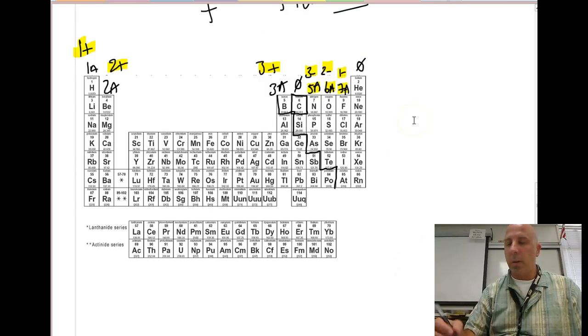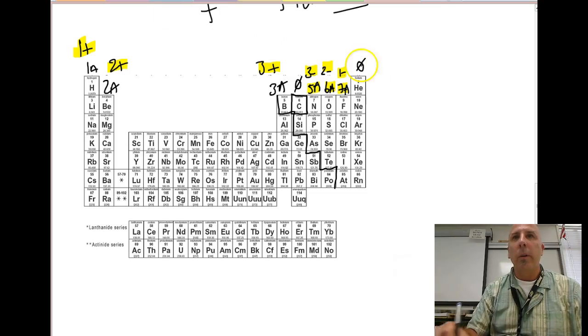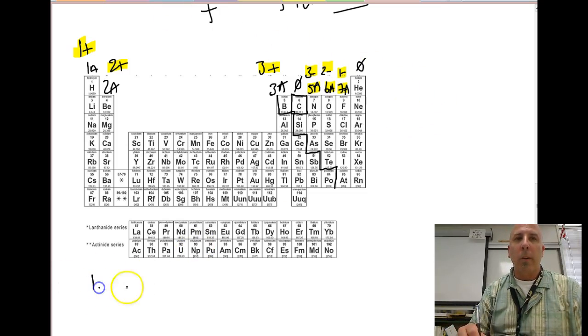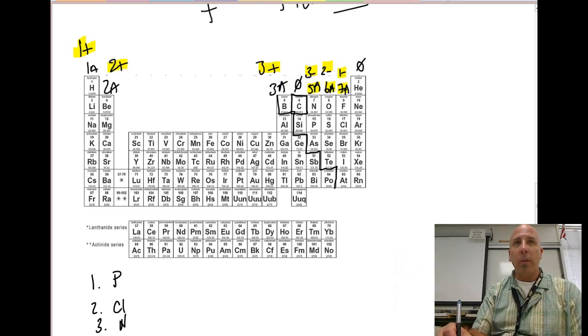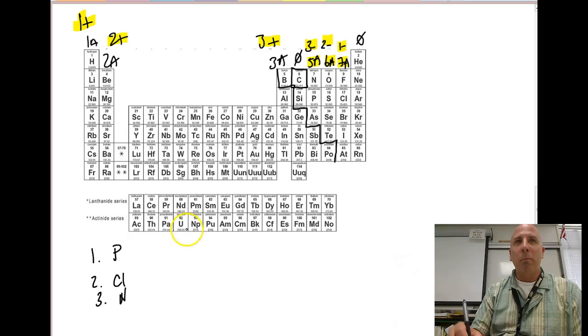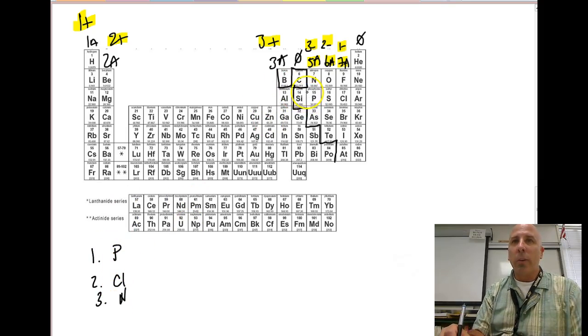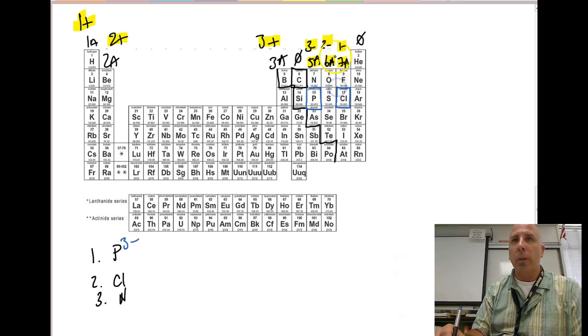Let's give you some practice problems to work on here. What charge does phosphorus form, what charge does chlorine form, and what charge does nitrogen form when they form ions? Phosphorus sits right here on the periodic table in column 5A, and you're going to have a 3- charge forming. Chlorine sits in the halogen group, 7A right here, so you're going to form a 1- charge. And when nitrogen forms an ion, it sits right here in the 5A group, once again forming a 3- charge.